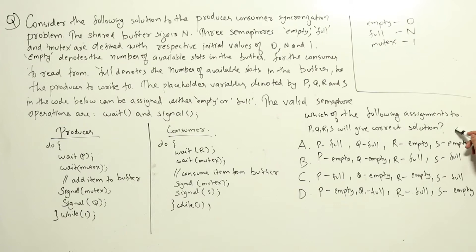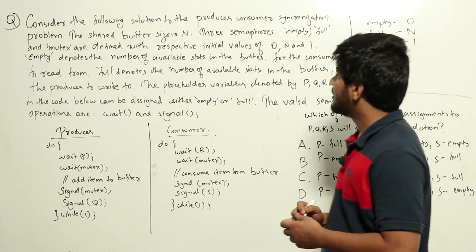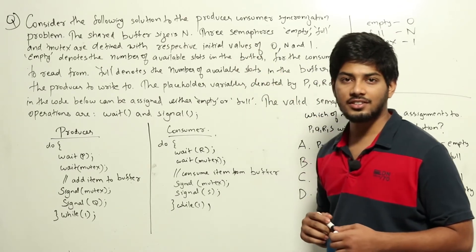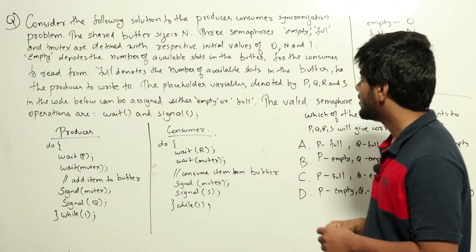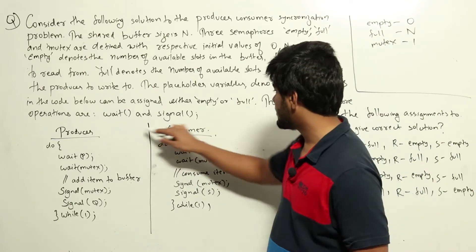Which of the following assignments to p, q, r, s will give the correct solution? In the question, this is a question from process synchronization topic from operating systems. We are given this producer-consumer problem.